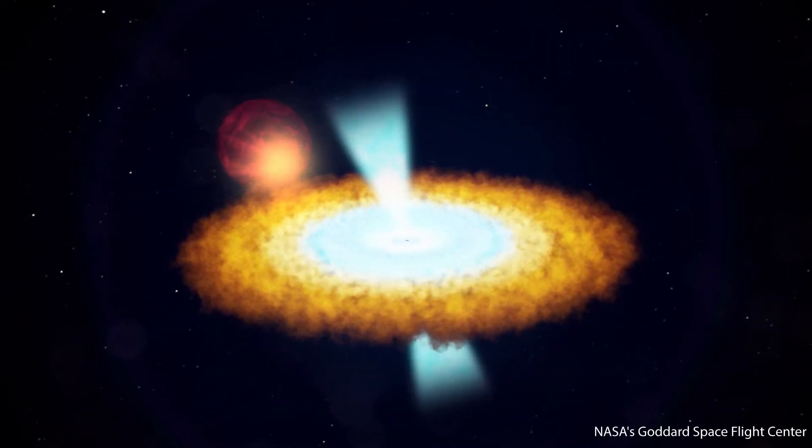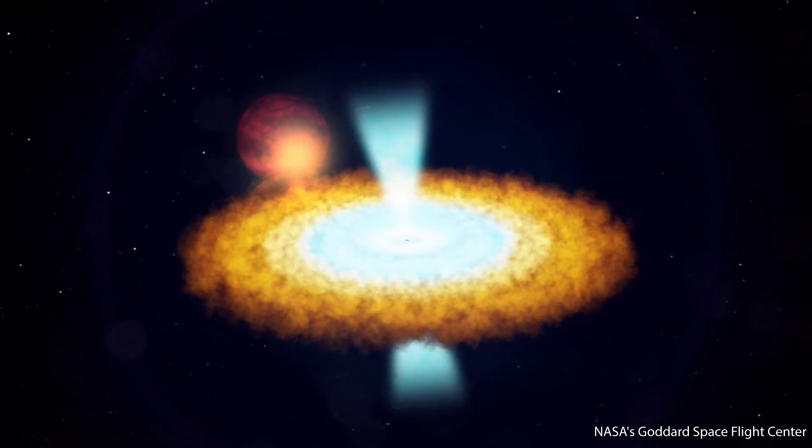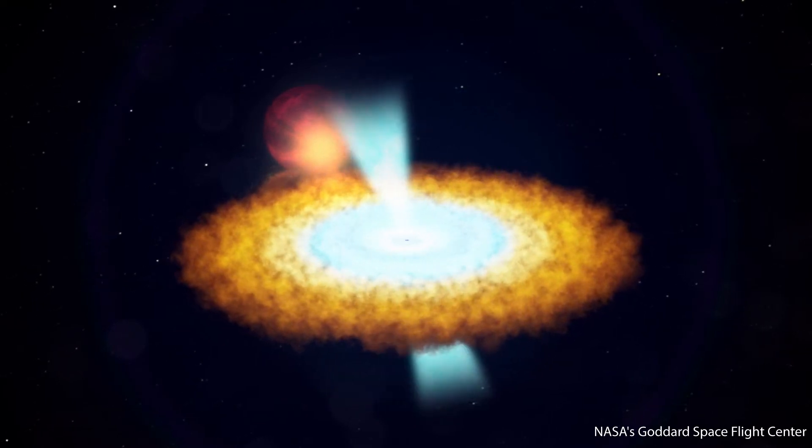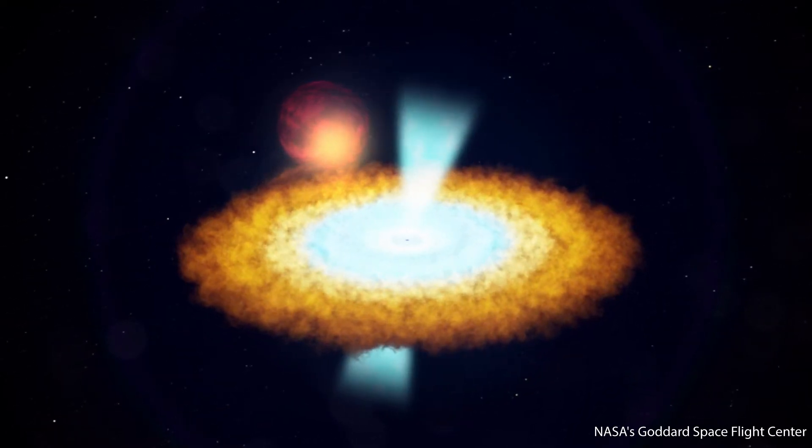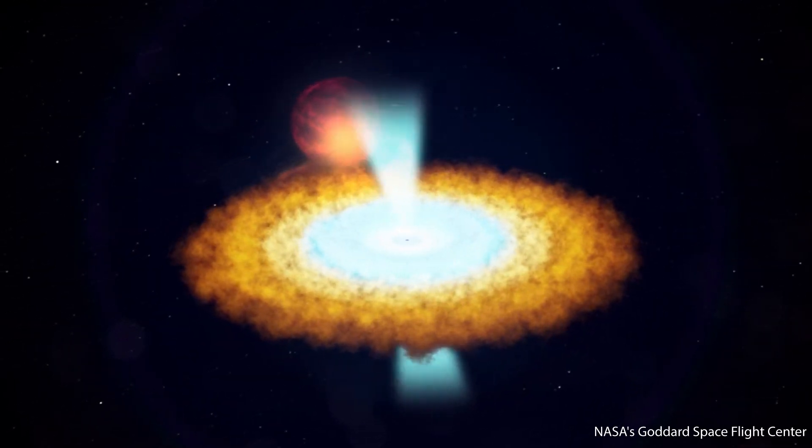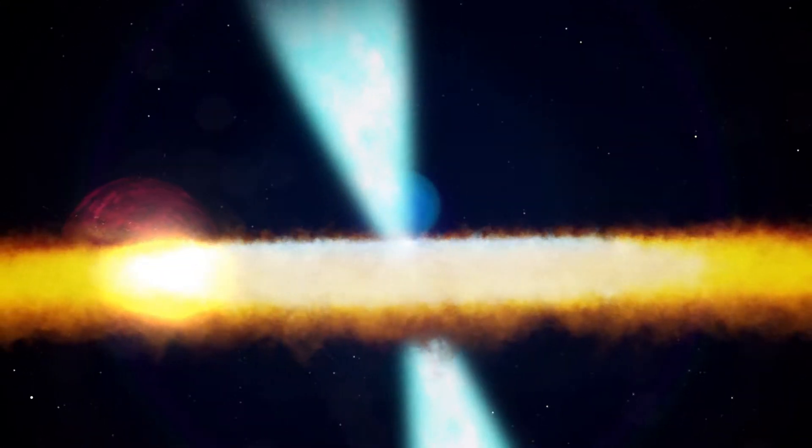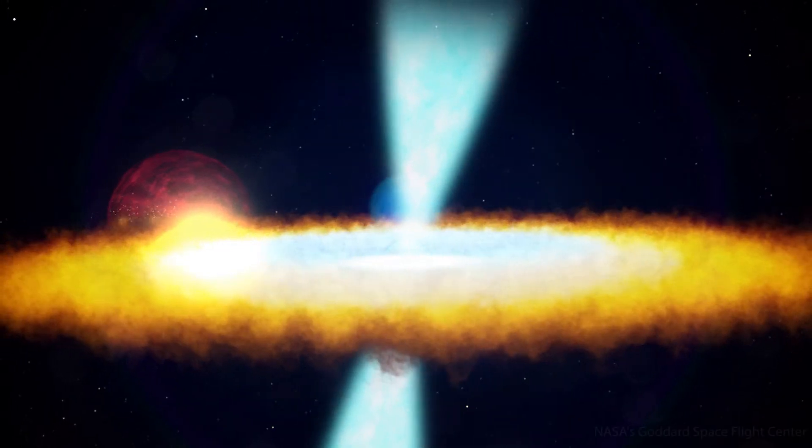Some neutron stars called pulsars emit beams of electromagnetic radiation from the magnetic poles and because of their constant rotation we can detect that radiation in very precise intervals. So precise in fact that they are considered to be the most accurate clocks in the universe.